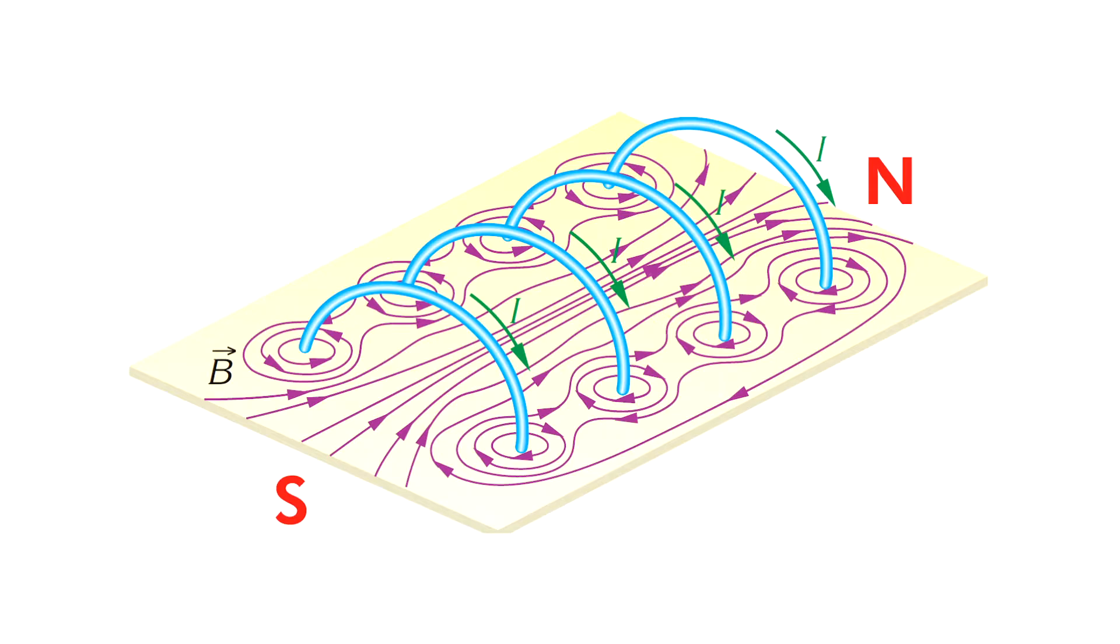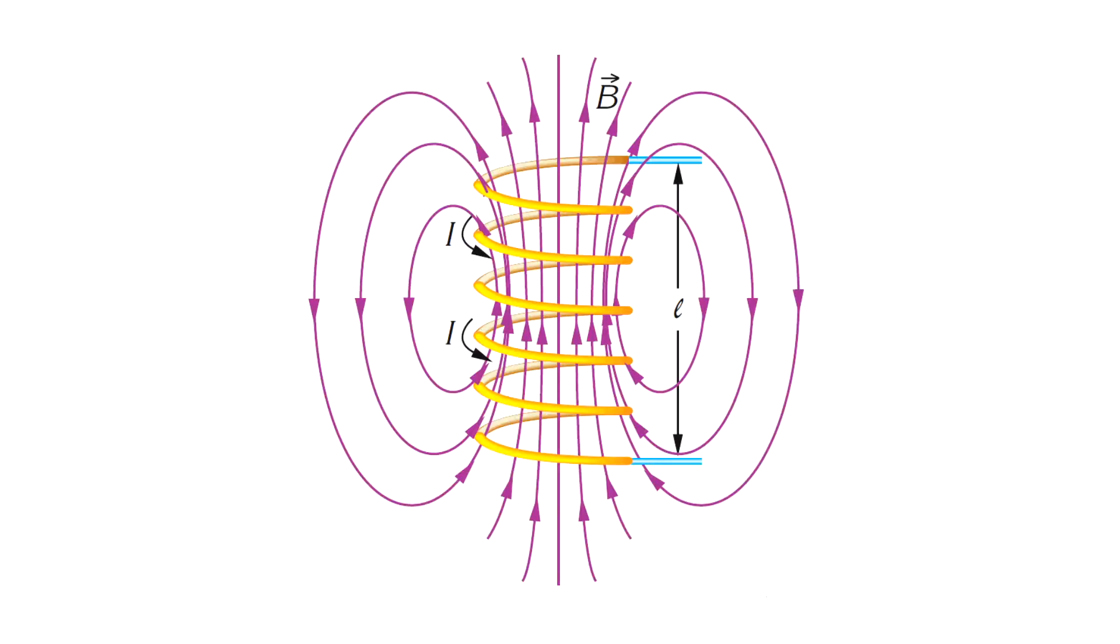Therefore, one end of the solenoid behaves like a north pole while the opposite end behaves like a south pole, as shown in the picture. From the properties you must know that magnetic field lines start from north and end at the south.